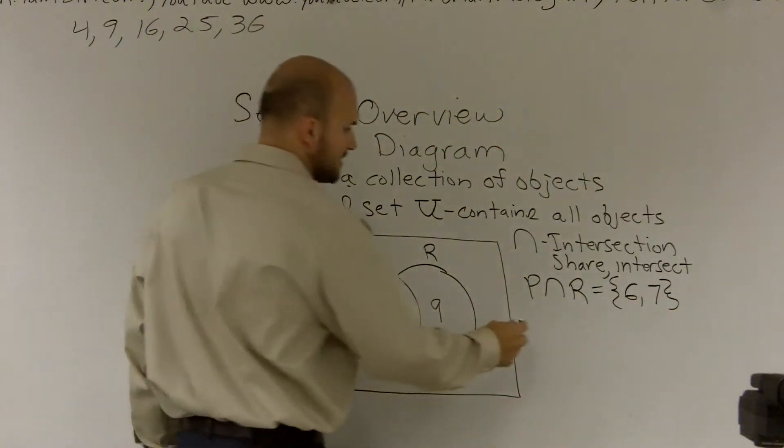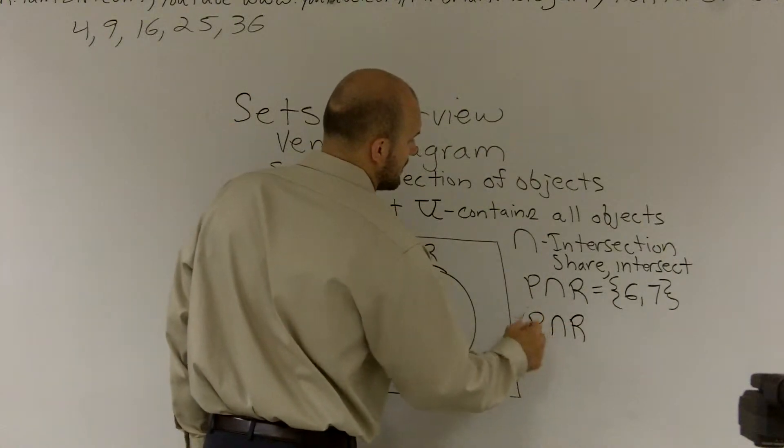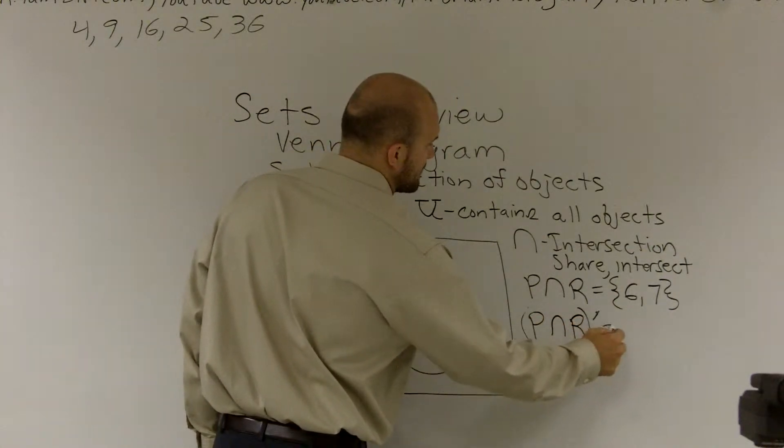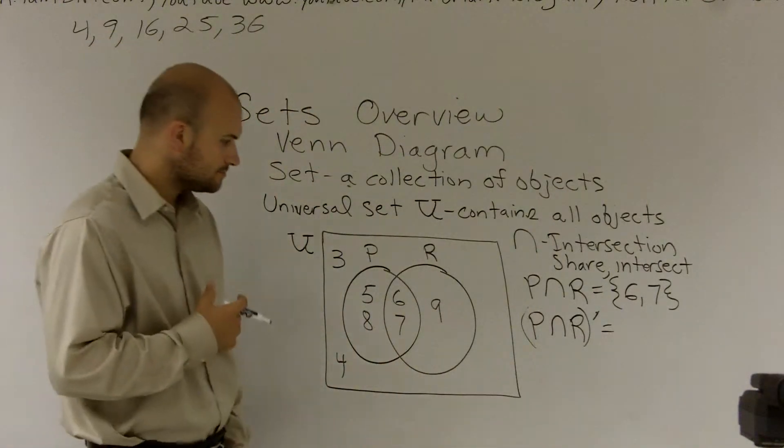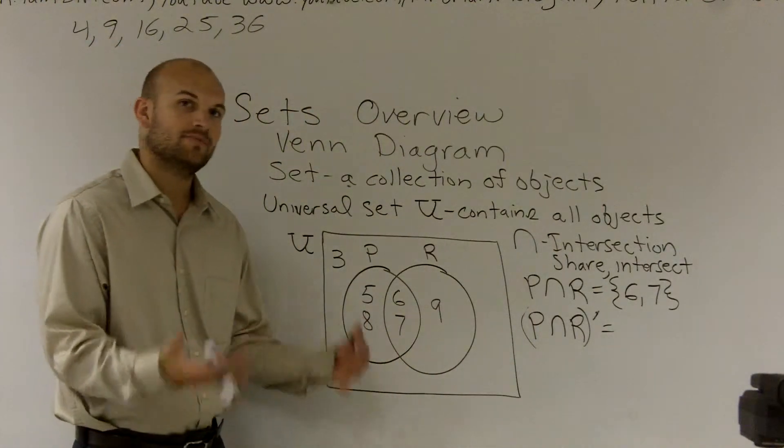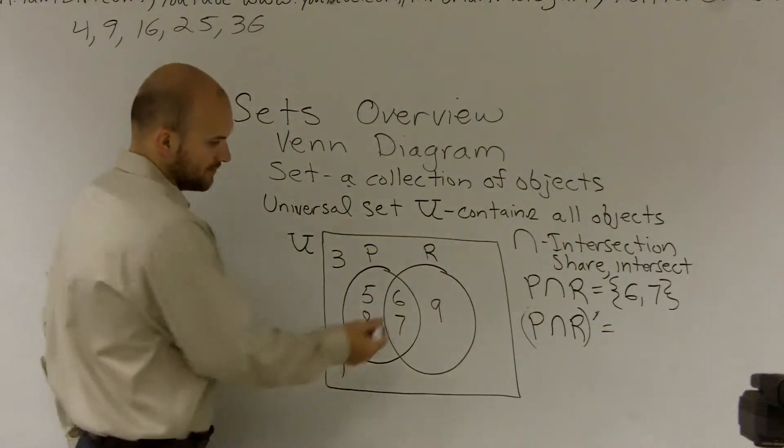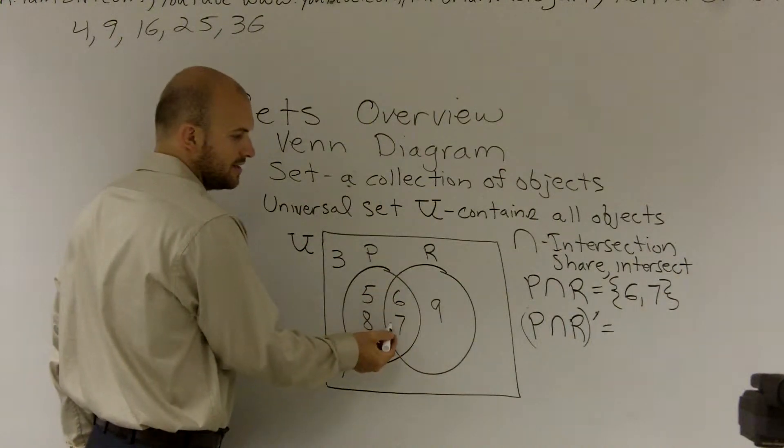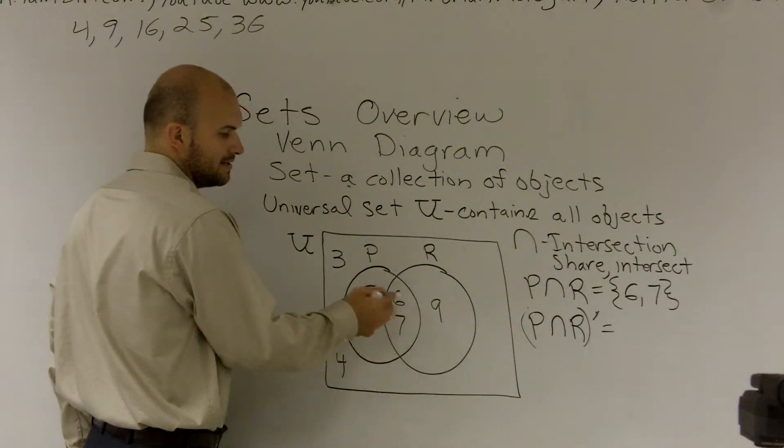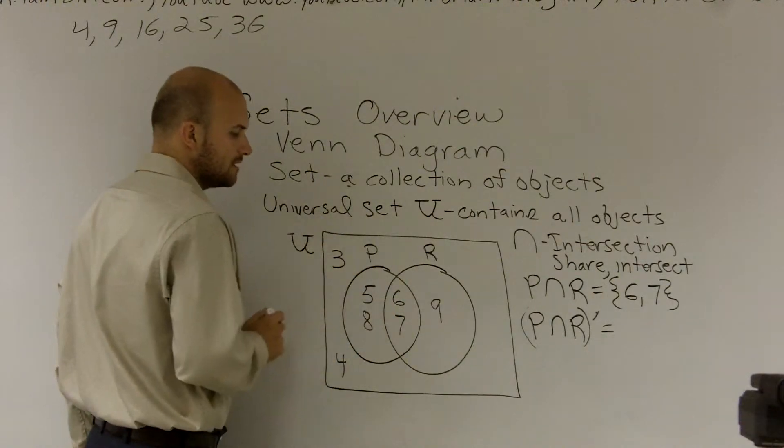Now, reverting back to my previous video, if I was going to take a look at this and say, what about P intersect R and then use the complement of that? What that's saying is, what is everything that is not in P intersect R, but that is still in our universal set? So if we said P intersect R is 6 and 7 right here, then what's everything that's not in this area right here, but that is still in our universal set?